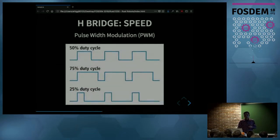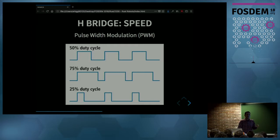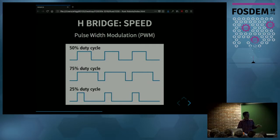With the H-Bridge you can also control the speed of the motor using Pulse Width Modulation (PWM). Instead of having the motor connected to the power supply the whole time, we connect it for, say, 75% of the time and leave it disconnected for the other 25%. This transfers less power to the motor, making it spin slower. This ratio between on-time and total time is called the duty cycle, ranging from 0% to 100%. 100% makes the motor spin at full speed; 0% makes it stop.